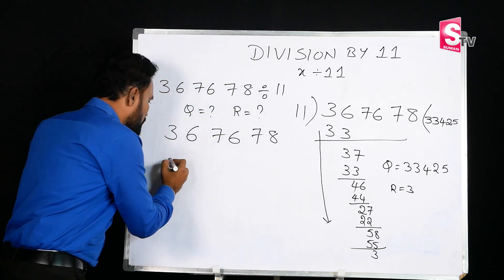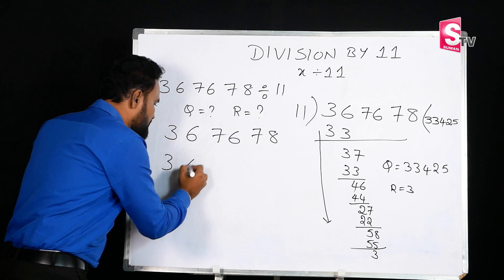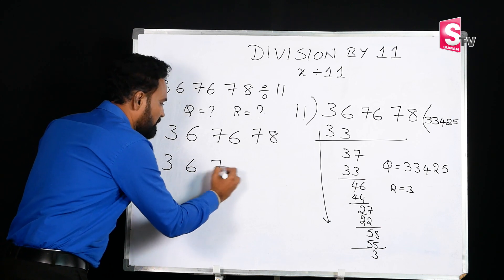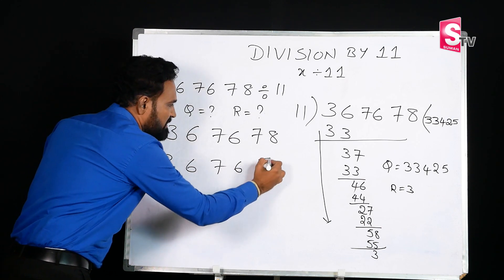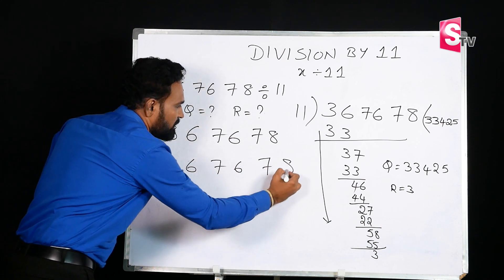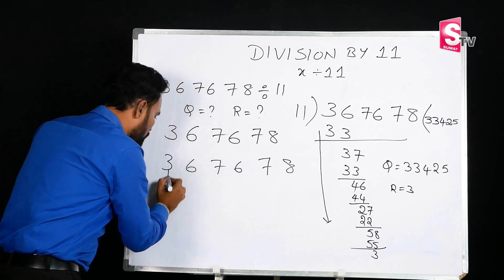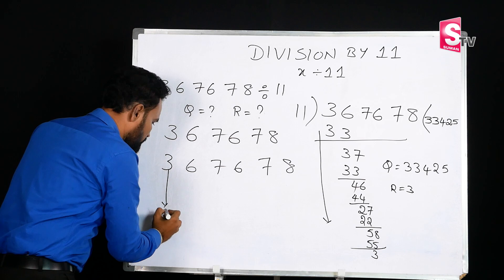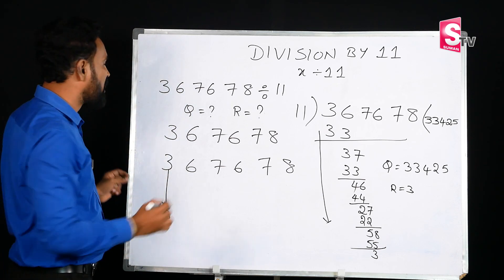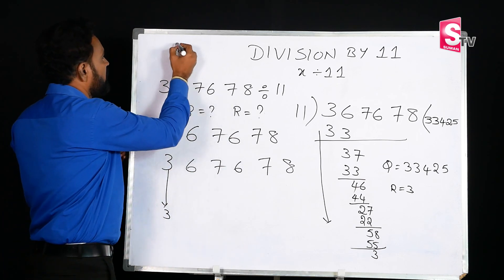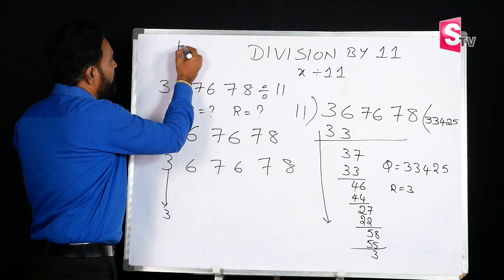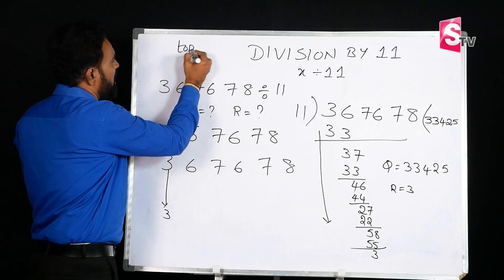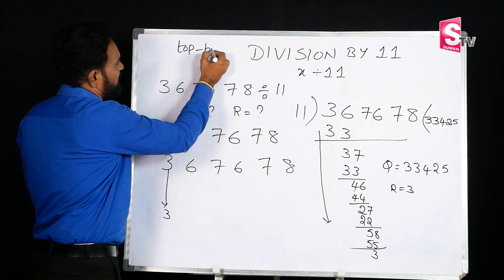The question is 367678. I will drop 3 as the first digit. Then I will subtract the bottom number from the top number.